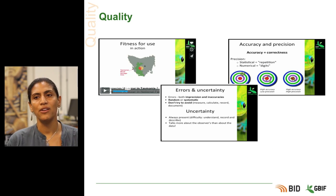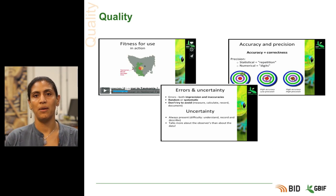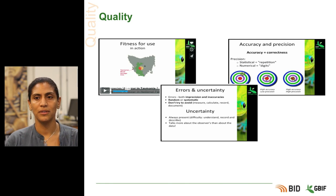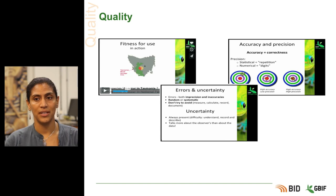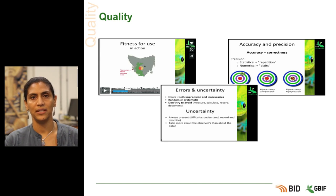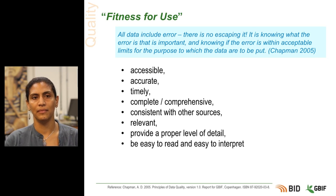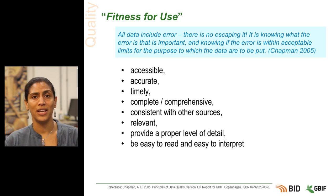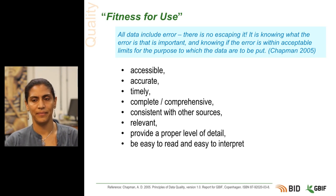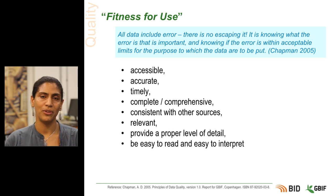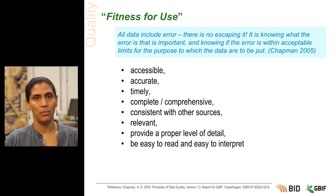There are three main criteria used to describe data quality: fitness for use, accuracy and precision, and errors and uncertainty. Let's look at each of these in more detail. Firstly, fitness for use — no data is perfect and no dataset is completely without errors, so never assume that it is. There are a number of parameters you can use to describe your data and help a user decide if it is going to be useful for their particular purpose. The first parameter is accessibility: how easily can someone get to your data? You can't use it if you can't find it.